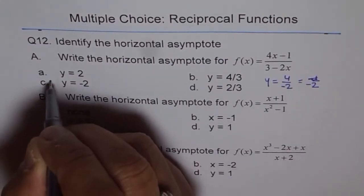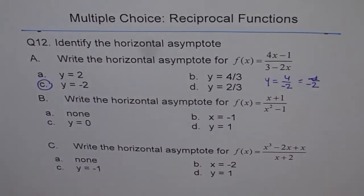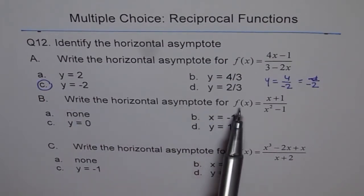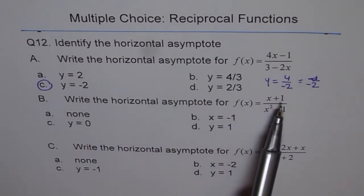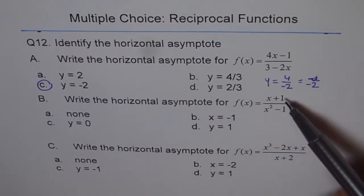Let's look into the next one. Part B: write the horizontal asymptote for f of x equals x plus 1 divided by x squared minus 1. Again, degree of numerator is 1, degree of denominator is 2.